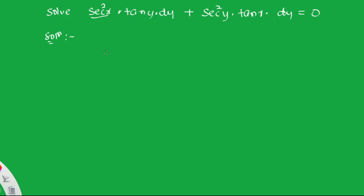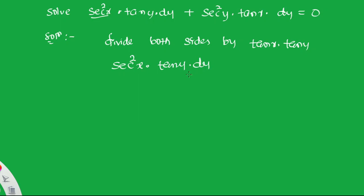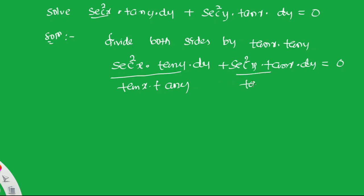To solve this, we divide both sides by tanx · tany. This causes tany to cancel in the first term and tanx to cancel in the second term, separating the variables.